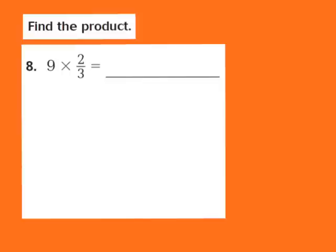Now let's take a look at question number 8. The problem is 9 times 2 thirds. We're back to finding groups of a fractional part — 9 groups of the fractional part, which is 2 thirds. Remember, when you find groups of a fractional part, we're going to use fraction circles to help us model. My whole number is 9, which means I need to draw 9 circles, so let's draw 9 circles together.